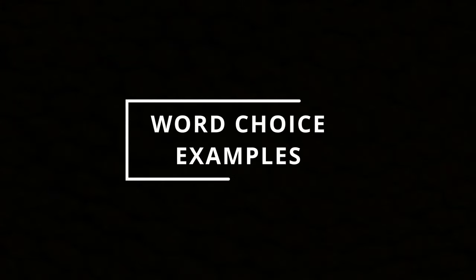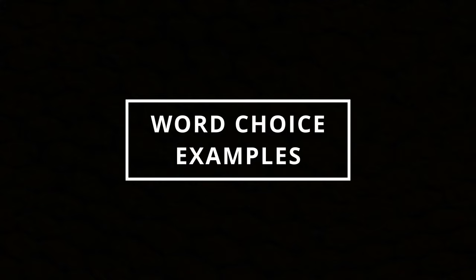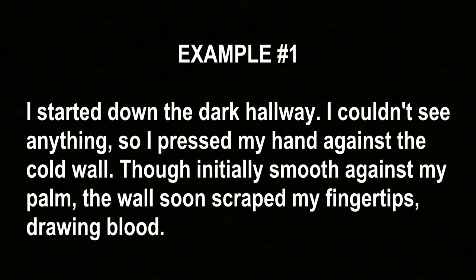The situation we're working with here is just a character walking down a hallway. I'm going to read two versions of this, and you'll notice how the different word choices create completely different types of atmosphere. Example number one: "I started down the dark hallway. I couldn't see anything, so I pressed my hand against the cold wall. Though initially smooth against my palm, the wall soon scraped my fingertips, drawing blood."